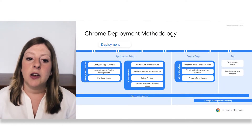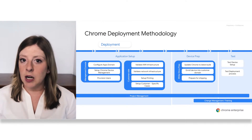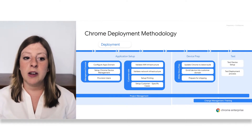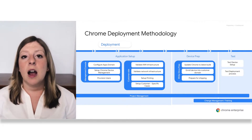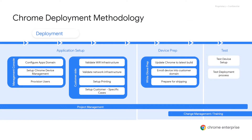Throughout the deployment, you'll work with your account team to focus on the management console as you configure your app domains, set up Chrome device management, provision your users, and also focus on the customer side of things while you validate your Wi-Fi infrastructure, your network infrastructure, setting up printing, and setting up customer specific use cases if applicable. That is really where the bulk of the work is going to be throughout the deployment.